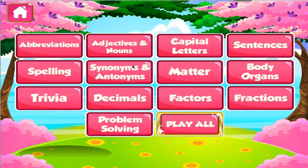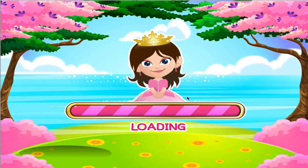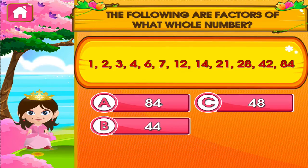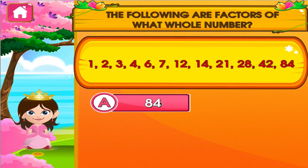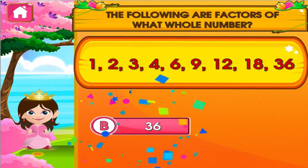Choose the activity you want to play. Factors. Tap the correct answer. Uh-oh! It's not that one. Good job! You got it right! Tap the correct answer. You're good at this.